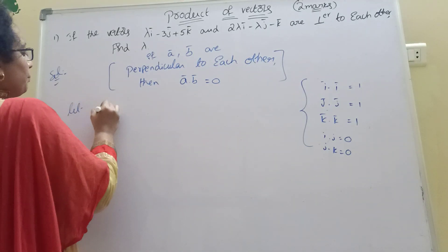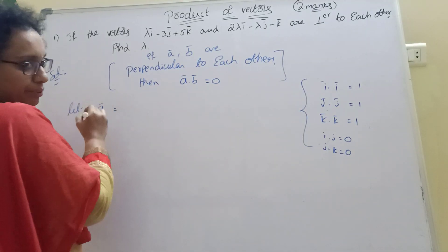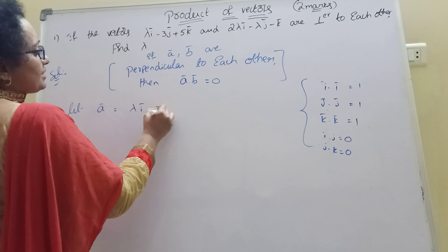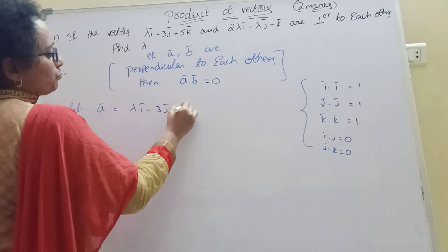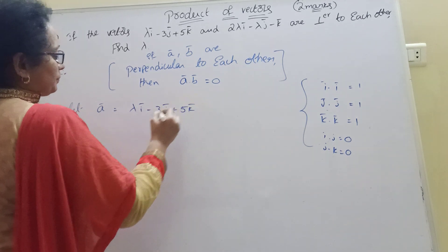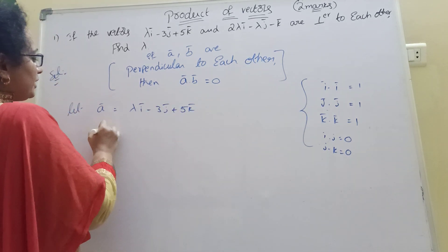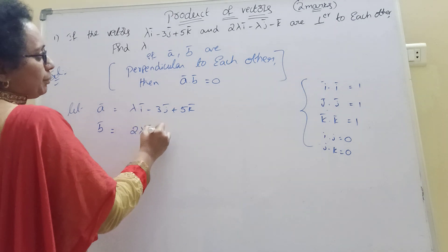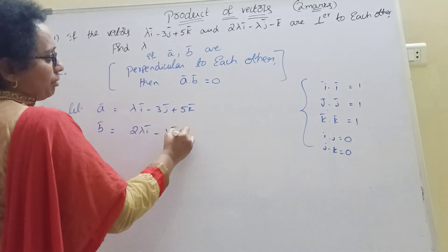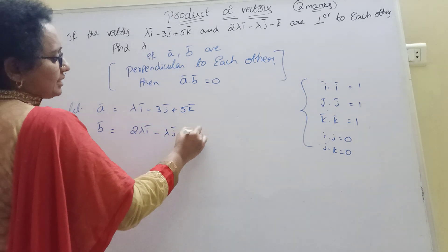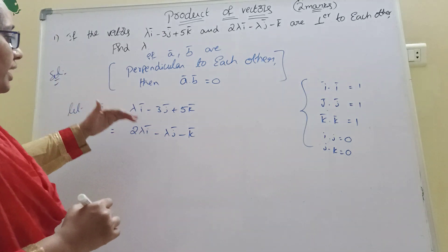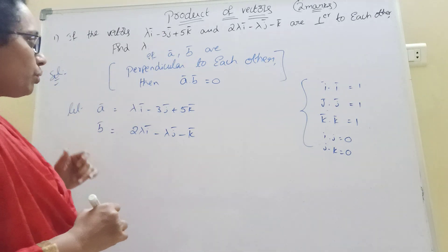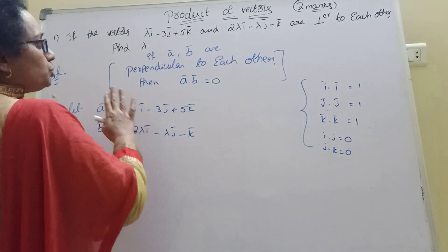Now let us set up the problem. Let A bar equal to lambda i bar minus 3j bar plus 5k bar. And B bar equal to 2 lambda i bar minus lambda j bar minus k bar. These are the two given vectors.